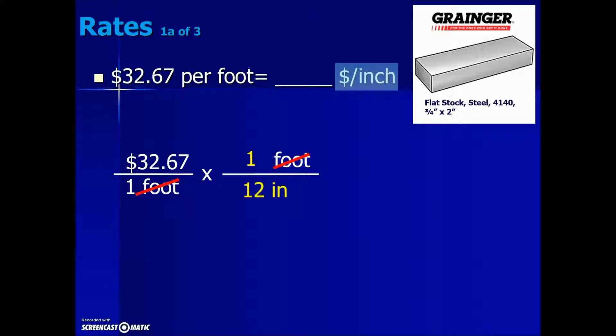Simplifying now with the multiplication of the fraction, we multiply the numerators and the denominators. Then, to simplify further, divide the numerator 3267 by the denominator value of 12 to give us an equivalent $2.72 per inch.